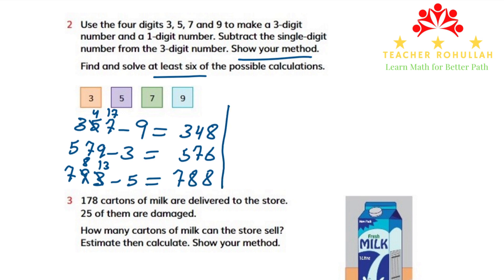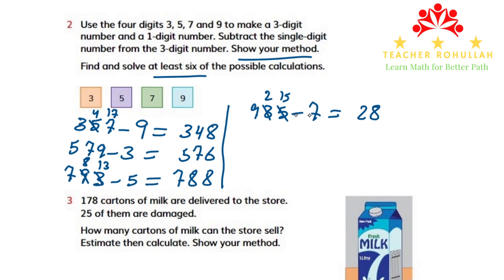Let's find the other three possible calculations. We can make 935 minus 7. We subtract 7 from 5 in the ones place, but 5 is not enough. We borrow from the tens place. It becomes 2, and the ones become 15. 15 minus 7 is 8, 2 minus nothing is 2, and 9 minus nothing is 9.